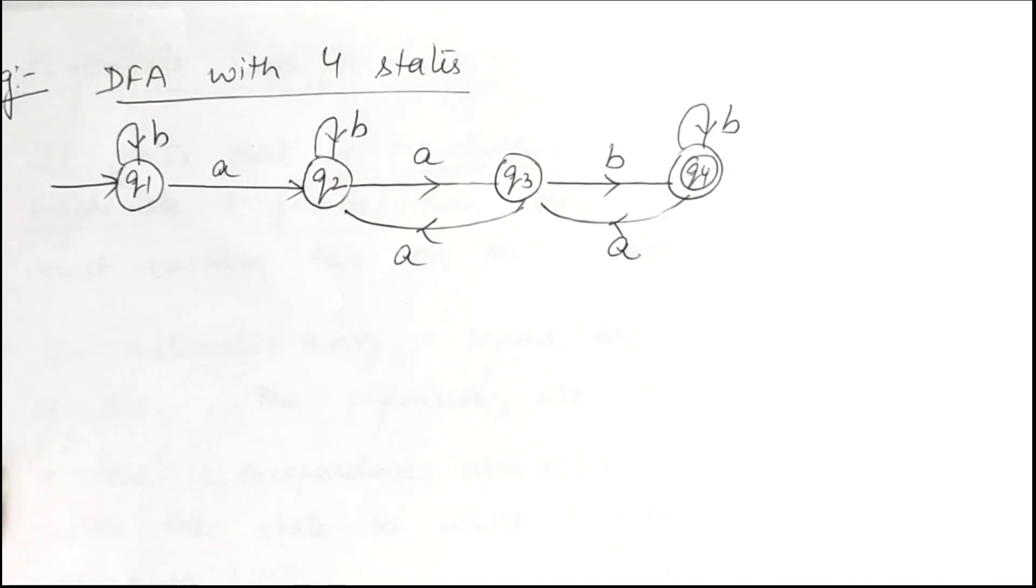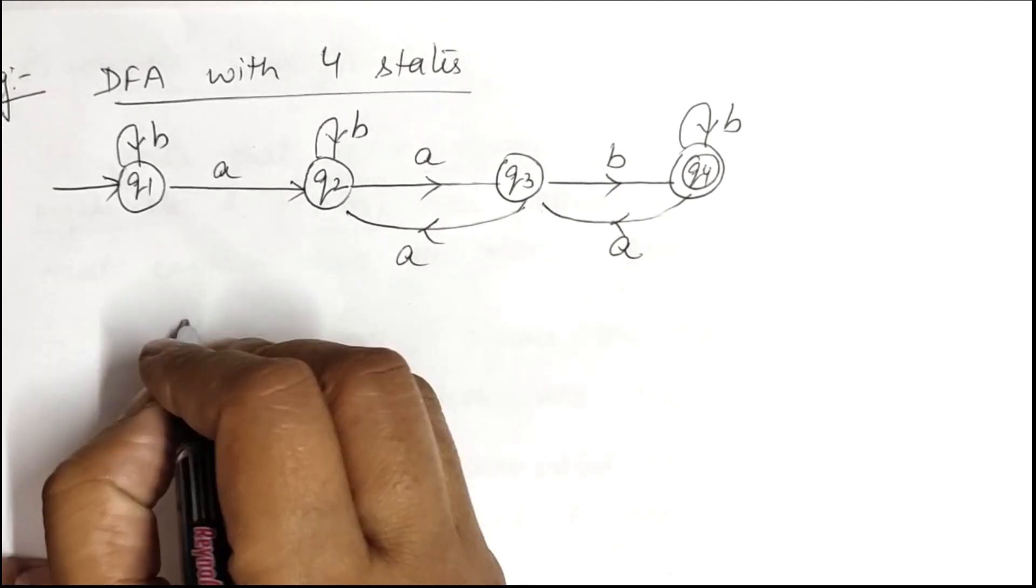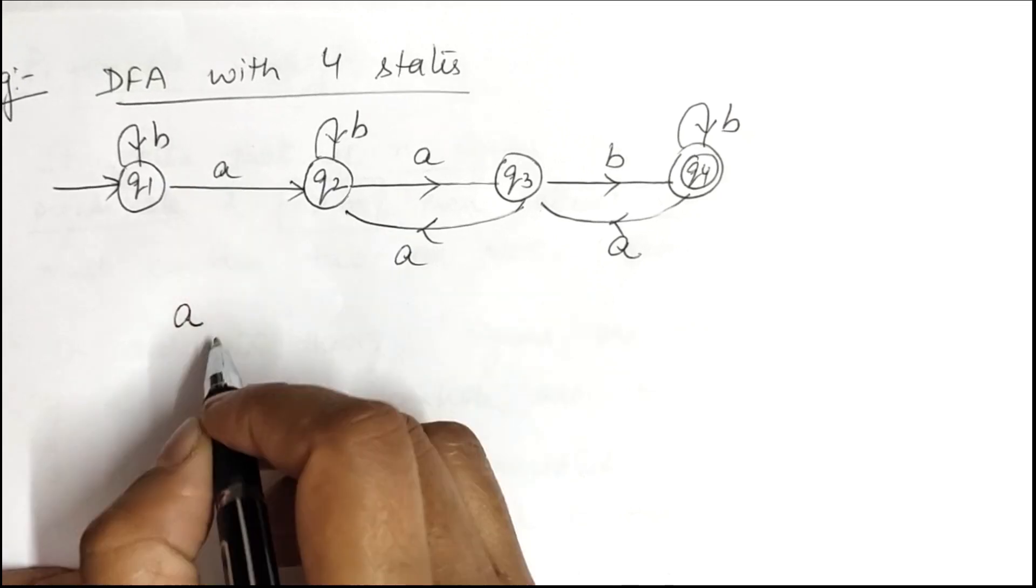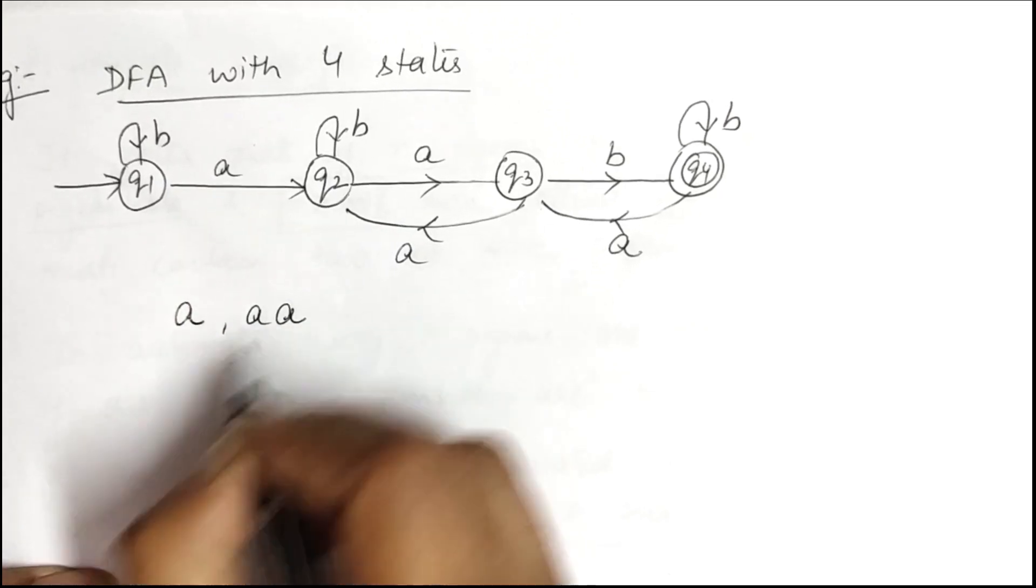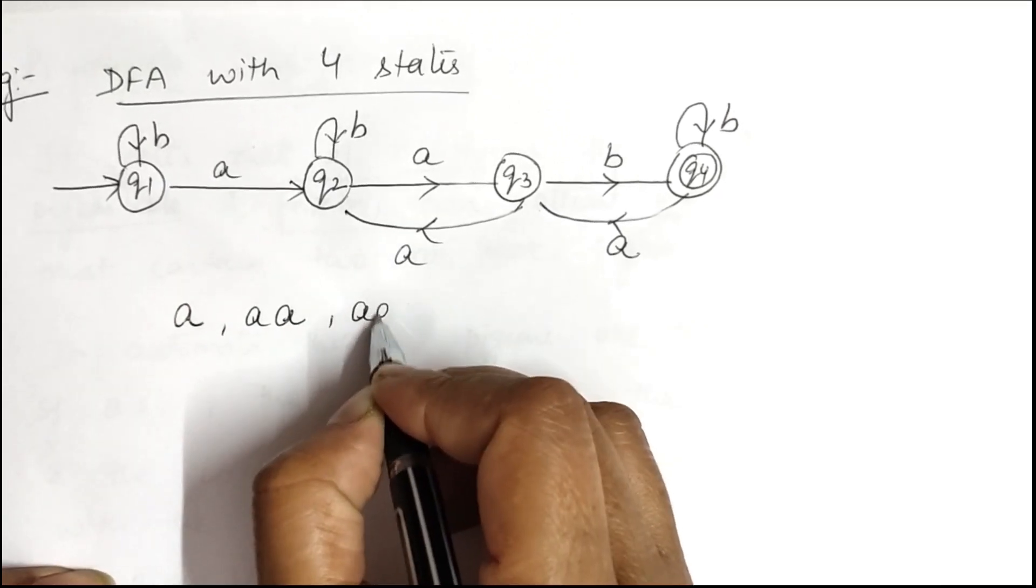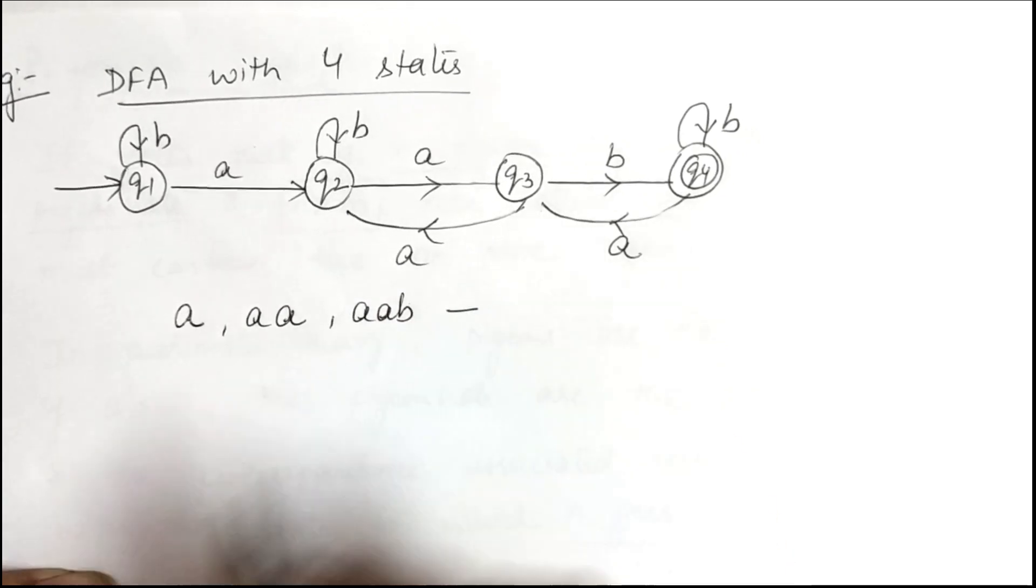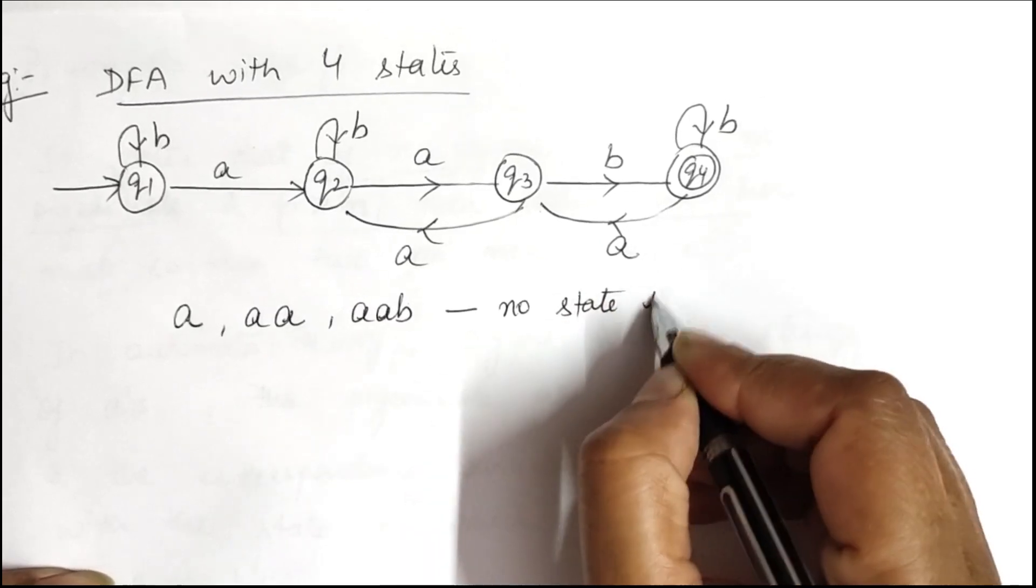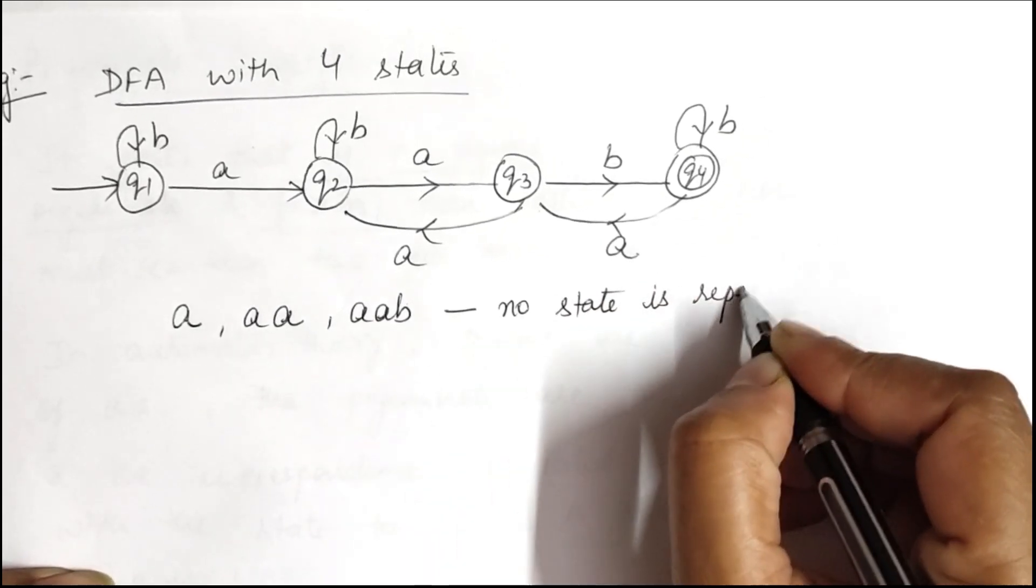In case of string length, if we take a string a, or aa, or aab, in all these cases no state is repeated.